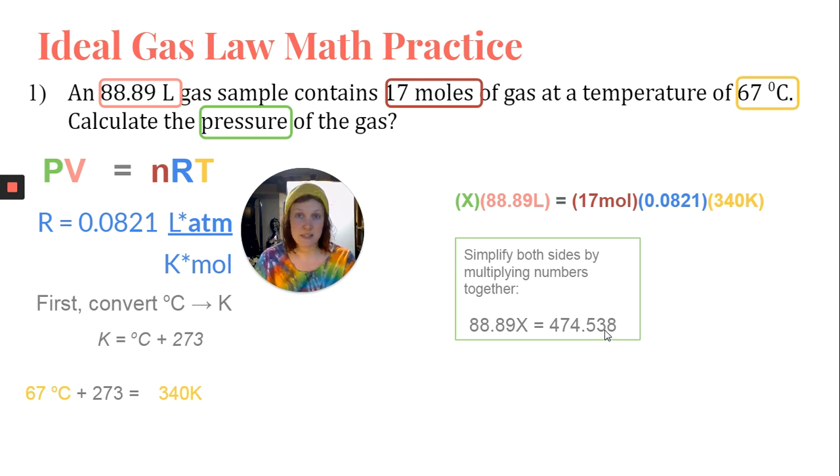Alright. Now that I've simplified both sides, I want to isolate X. And because 88.89 is multiplied by X, I'm going to divide by 88.89 to get X by itself. And I'm going to do that to both sides. So it's 474.538 divided by 88.89. And that gives me 5.338486.